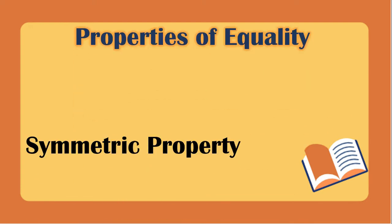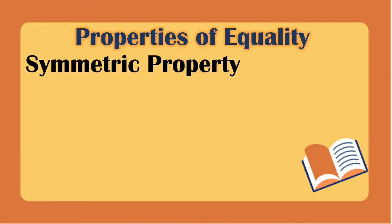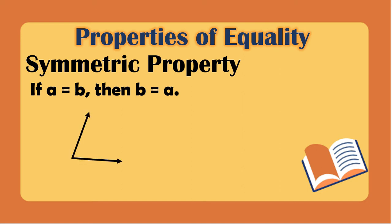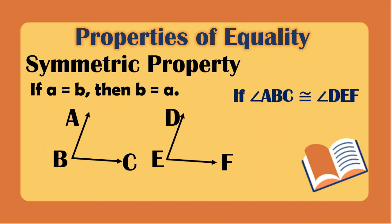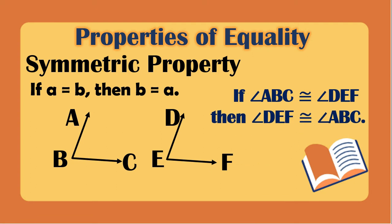The second is the symmetric property: if A equals B, then B equals A. Given two angles, if angle ABC is congruent to angle DEF, then angle DEF is congruent to angle ABC.